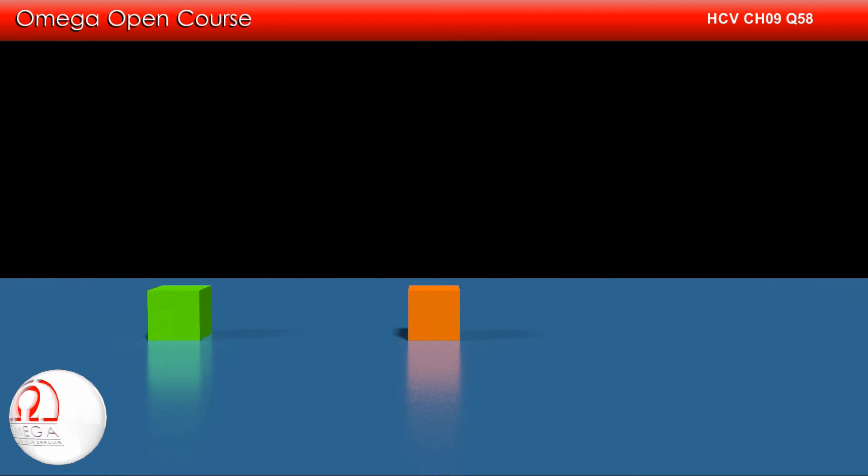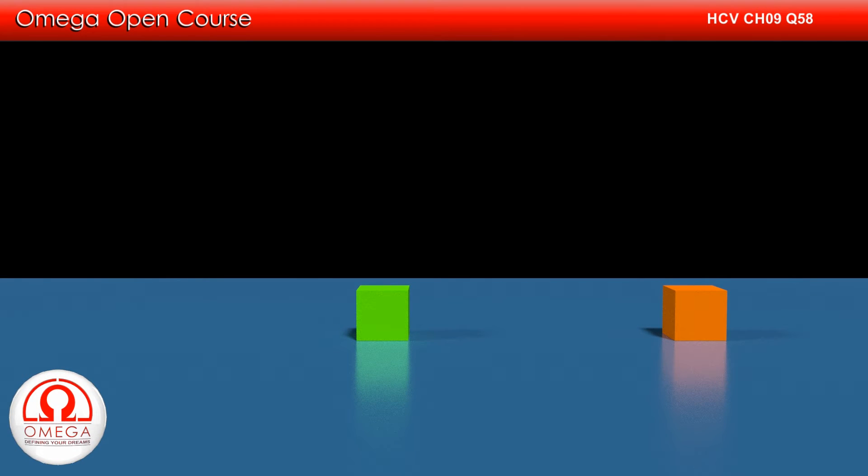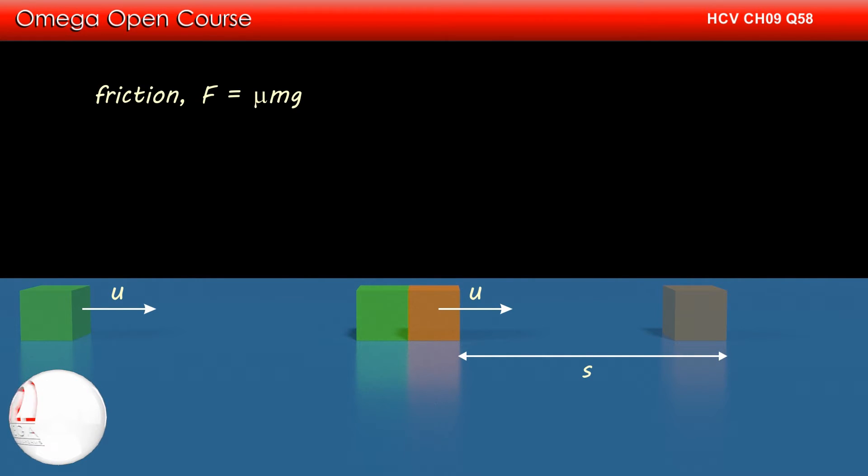As the block moves ahead, friction dissipates its kinetic energy and eventually it stops. The energy dissipated by friction must be equal to the change in kinetic energy of the block. Let us assume the distance the block travels before coming to rest is s. The normal force by ground on the orange block is mg and therefore the friction force acting on it is μmg.